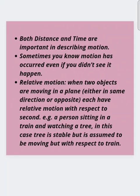Both distance and time are important in describing motion. Sometimes you know motion has occurred even if you didn't see it happen. Such motion is called relative motion. When two objects are moving in a plane, either in the same direction or opposite, each has relative motion with respect to the other.